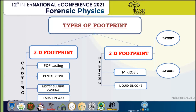The method involves mixing POP or dental powder in a particular amount of water in a plastic bag, then pouring it into the impression from any corner, and leaving it to set. The material used for casting should be capable of producing a clear, defined cast, should not get absorbed into the impression, and should have a lasting durability or shelf life.